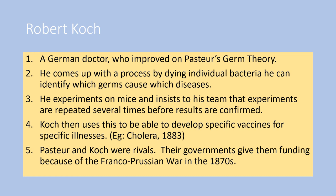Pasteur and Koch were rivals — Pasteur was French, Koch was German, and in the early 1870s France and Germany were at war in the Franco-Prussian War. Both governments were willing to give Pasteur and Koch money to further their research, wanting to get one up on each other not just on the battlefield but in the field of science as well. France loses the Franco-Prussian War and Germany punishes them incredibly harshly in the aftermath.